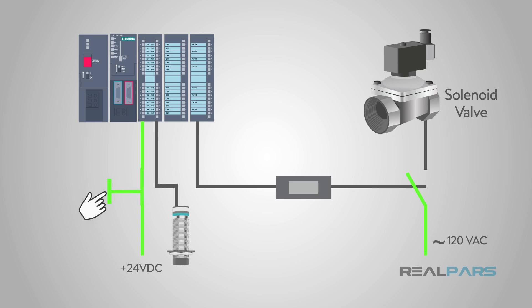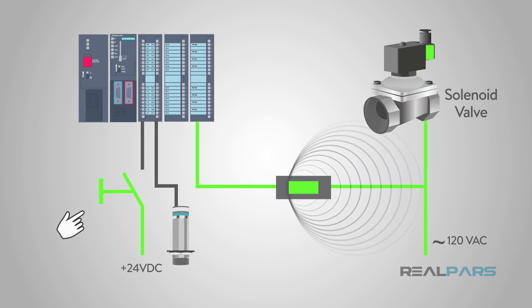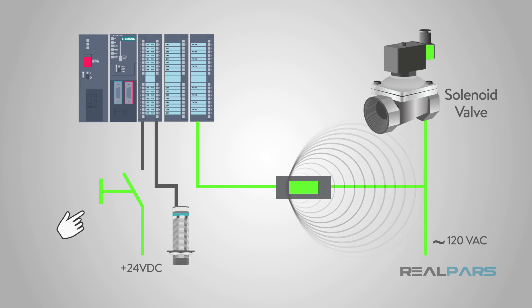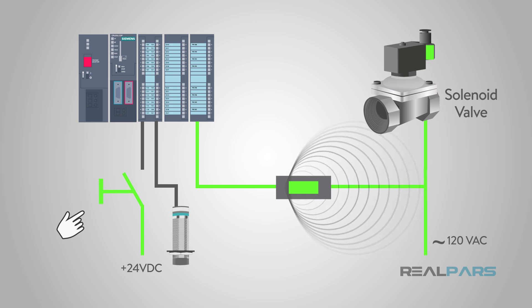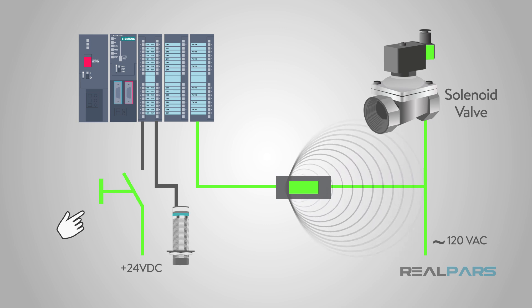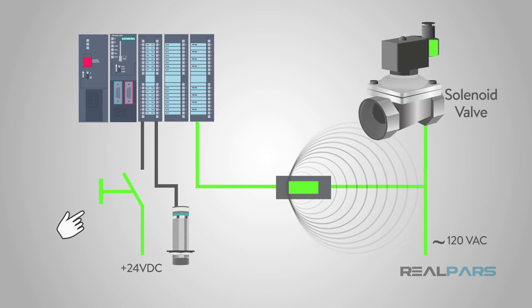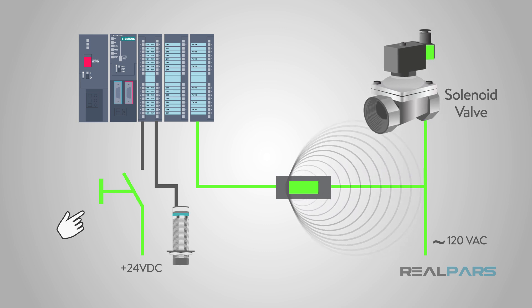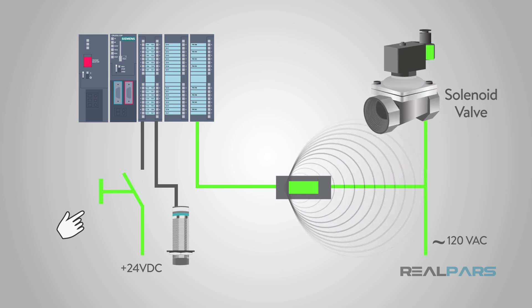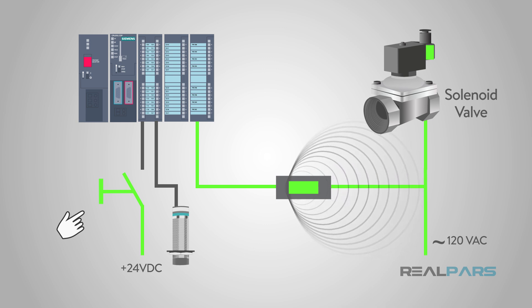Those inputs will go to a PLC, which will then make decisions based on how it was programmed. The PLC will then activate whatever output the program says to run. An output can be anything that does work, such as a motor, solenoid, heater, or a light.